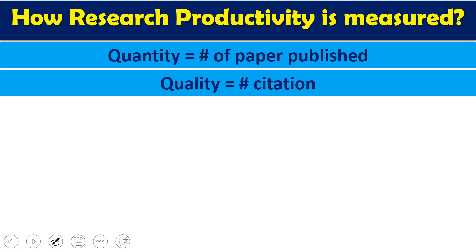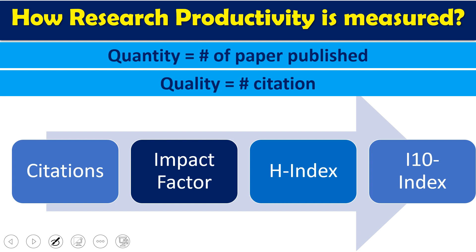When we talk about the quality of productivity, we talk about the number of citations, which varies depending on a number of parameters. We have different important indexes: citation is one index, impact factor, h-index, i10-index, and a number of other indexes. In some other lectures we will cover these one by one. I have already made a video on h-index, how to write a paper, and how to do a literature search. Today I'm going to talk about impact factor.